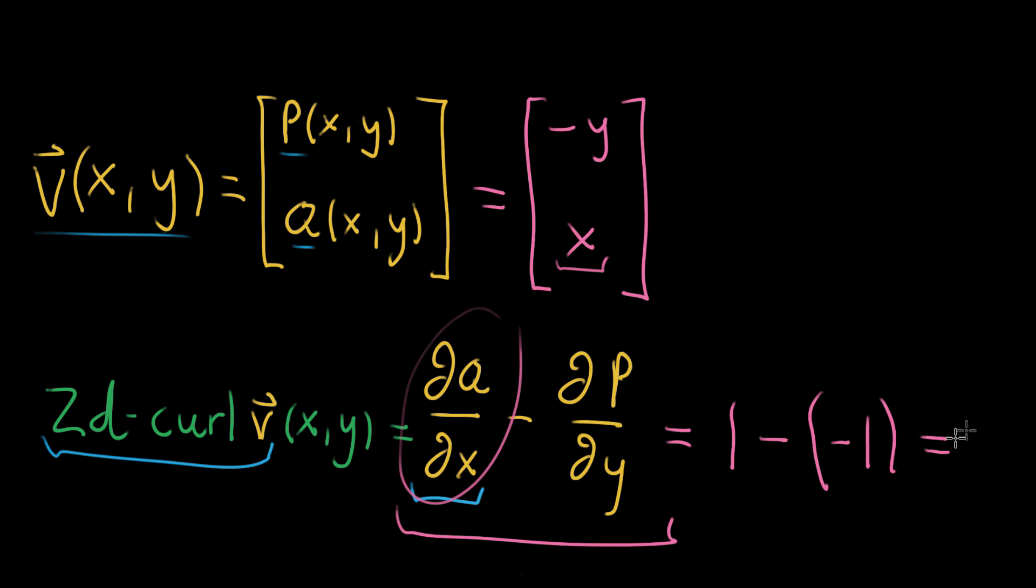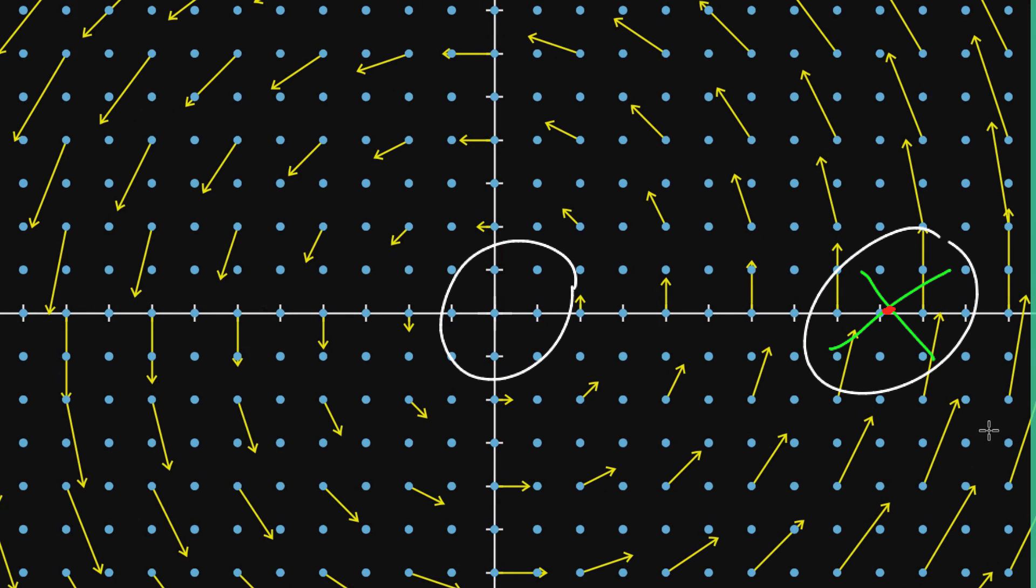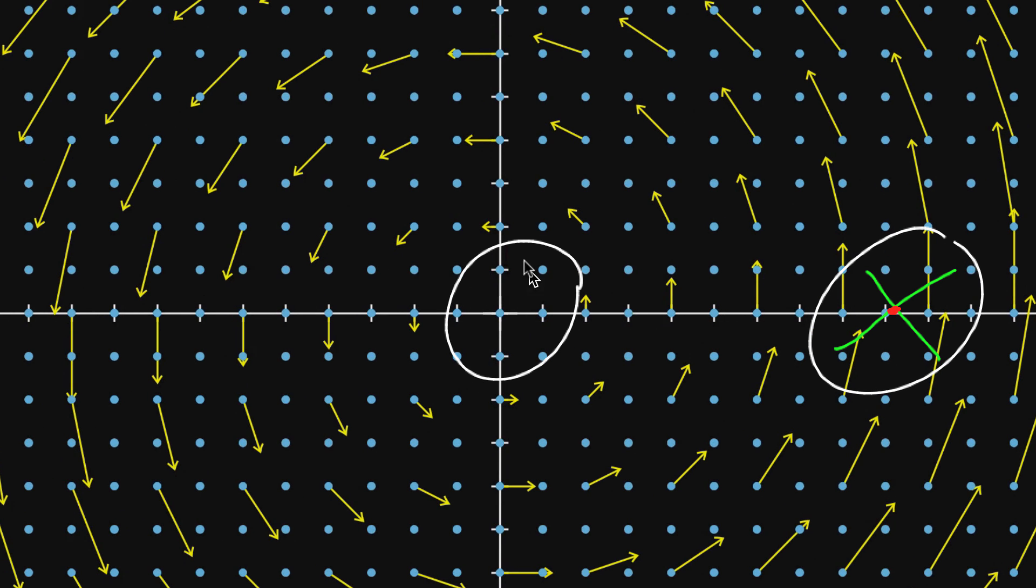So the 2D curl is equal to 2, and in particular it's a constant 2 that doesn't depend on x and y, which is pretty unusual. Most times that you apply 2D curl to a vector field, you're going to get some kind of function of x and y. But the fact that this is constant tells us that when we look over at this fluid flow, the sense in which curl wants to say that rotation happens around the center is just as strong as it's supposed to happen over here on the right, or anywhere on the plane for that matter.